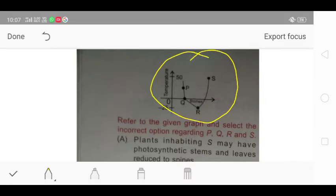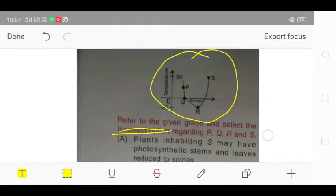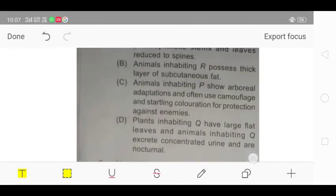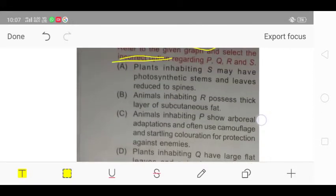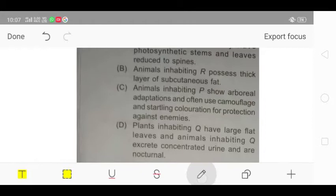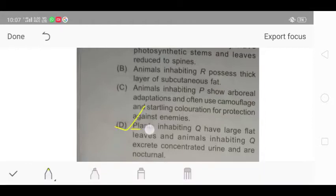The correct answer for question number 5 is option number D, which says that plants inhabiting Q have large flat leaves and animals inhabiting Q excrete concentrated urine and are nocturnal.